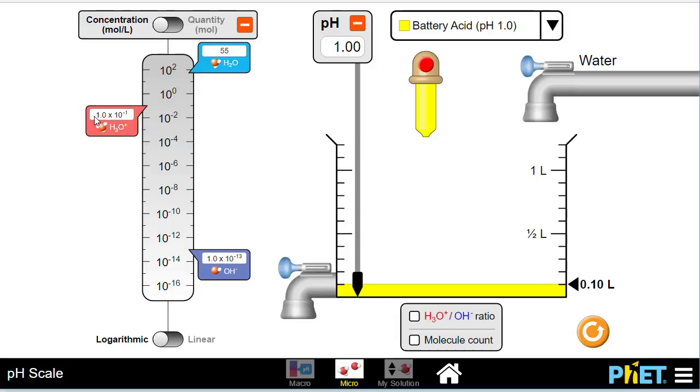What we want to do is identify the concentration of hydronium ions. These are the acid particles, and their concentration is on the left-hand side. It's 1 times 10 to the exponent negative 1.